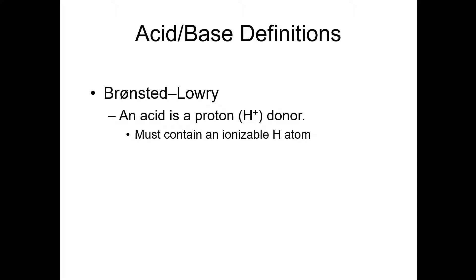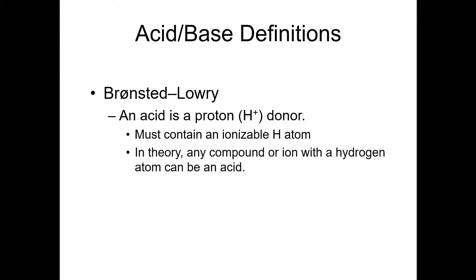In order for a thing to be a Bronsted-Lowry acid, it has to contain an ionizable hydrogen atom. What do we mean by ionizable? In theory, actually any compound or ion that contains a hydrogen atom could be an acid. It simply has to do in the end with what the magnitude of the equilibrium constant is. So there are certain things with hydrogen atoms that we consider acids, and there are certain things with hydrogen atoms that we do not consider acids, but in fact anything with a hydrogen atom can in theory be thought of as an acid.